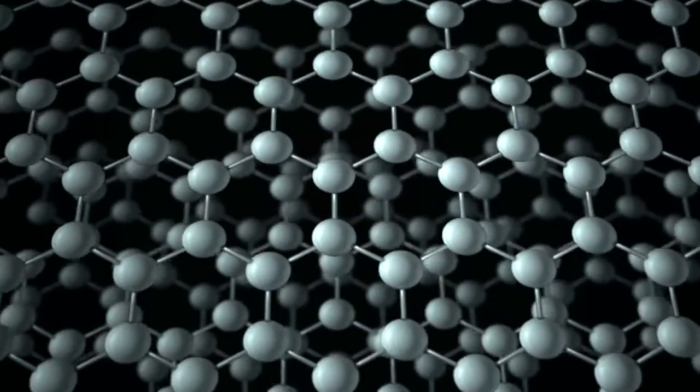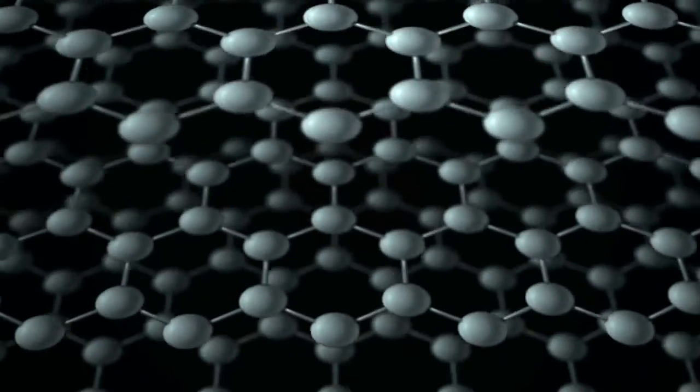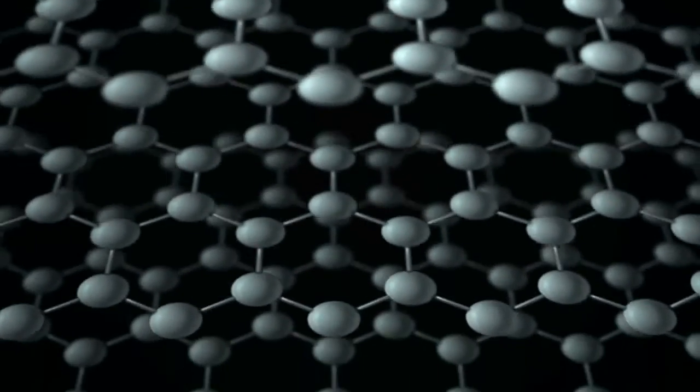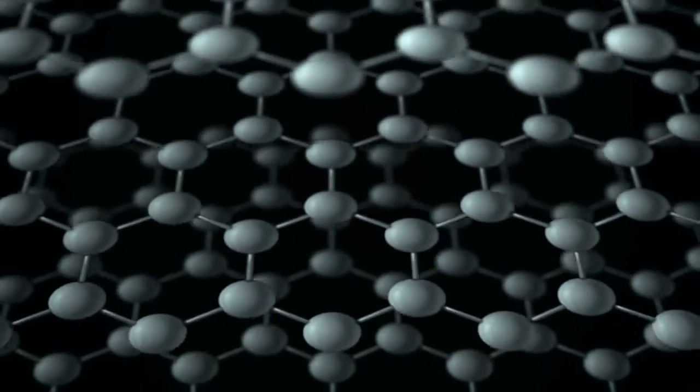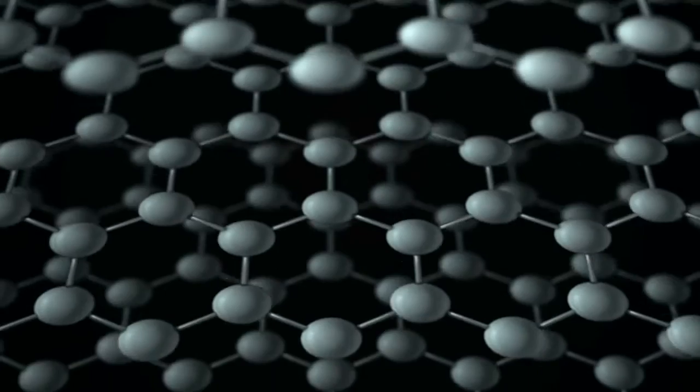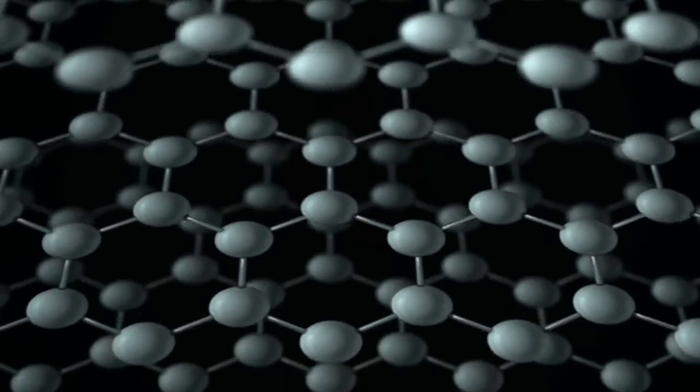In graphite, each carbon atom is linked to three others in layers of hexagonal shapes that look like chicken wire. The bonds within the hexagonal sheets are strong, but each layer is only weakly attracted to the next, which allows the layers to slip by one another.